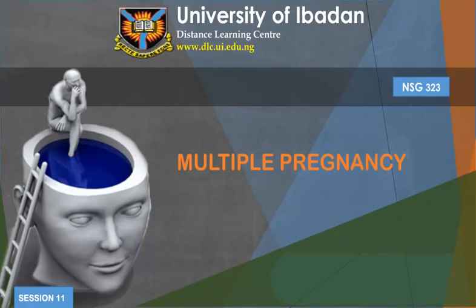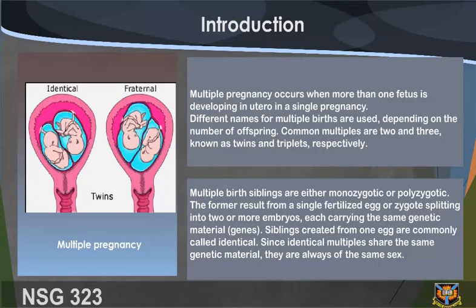Welcome to NSG 323 study session 11: multiple pregnancy introduction. Multiple pregnancy occurs when more than one fetus is developing in utero in a single pregnancy. Different names for multiple births are used depending on the number of offspring. Common multiples are two and three, known as twins and triplets respectively. Multiple birth siblings are either monozygotic or polyzygotic.